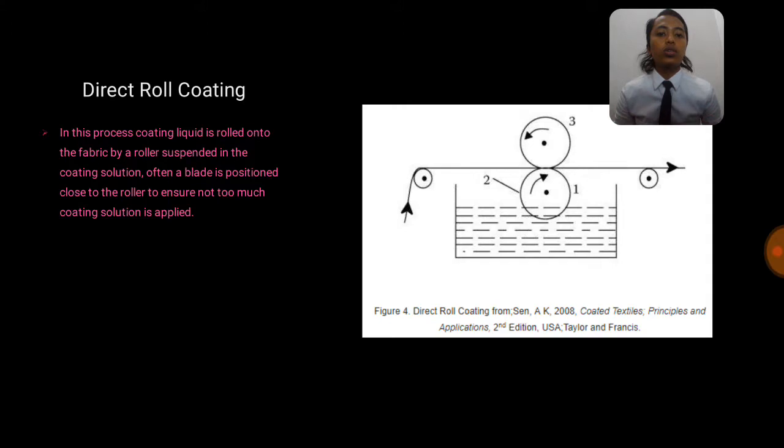The direct roll coating: in this process, coating liquid is rolled onto the fabric by a roller suspended in the coating solution. Often a blade is positioned close to the roller to ensure not too much coating solution is applied.